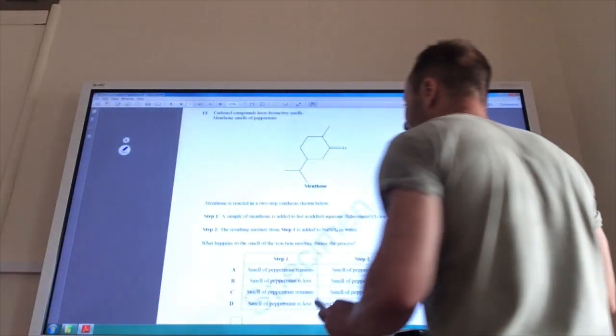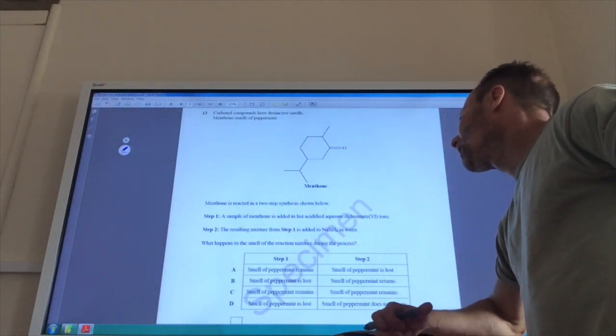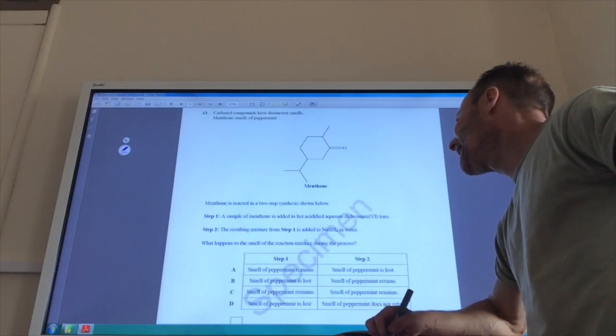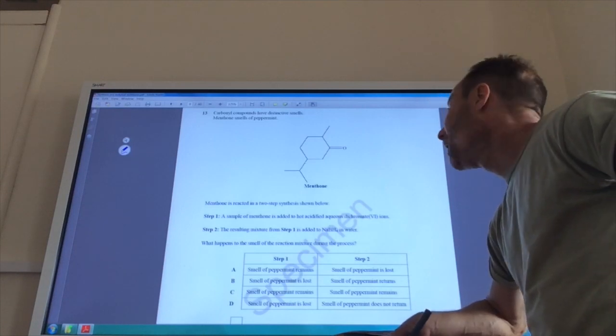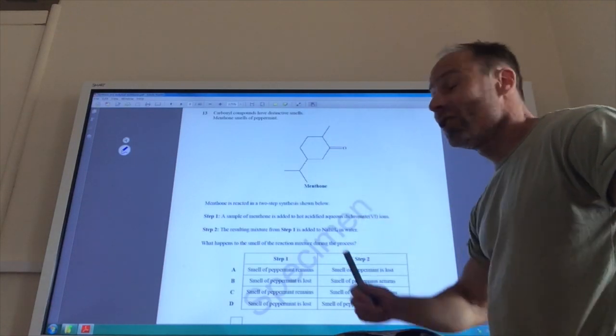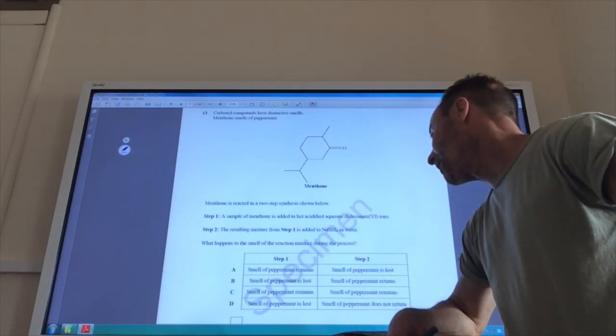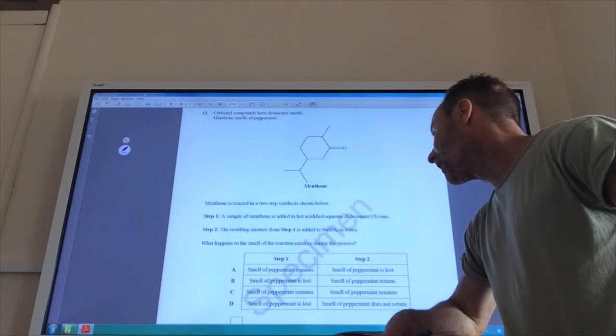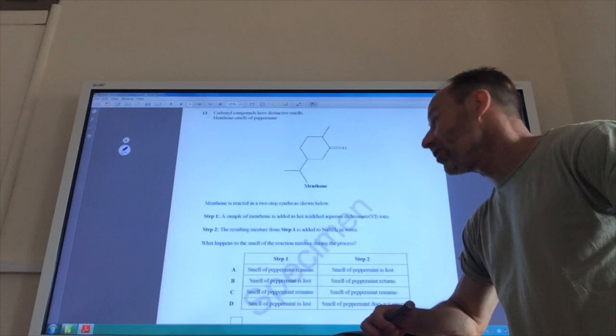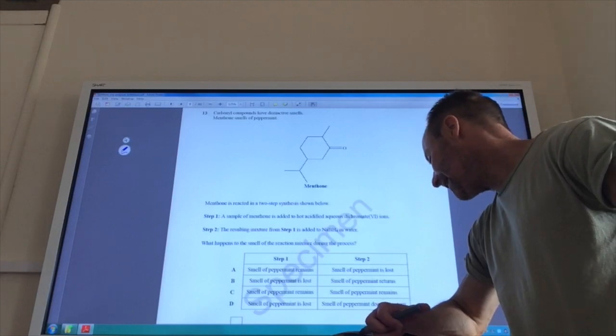Okay, this is quite an interesting one. So, I take step one and I'm going to react this molecule with acidified aqueous dichromate(VI) ions. What will happen? Well, absolutely nothing. I've got a ketone group here. You know that ketones are not oxidized. So, the molecule is not affected by that at all. So, the smell of peppermint will remain. So, I'm either looking at A or C. I then add it to sodium borohydride, in which case the ketone group will be reduced to a secondary alcohol. So, I will lose the smell. So, therefore, the answer to 13 is A.